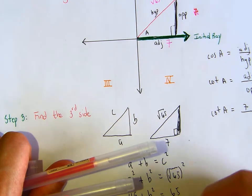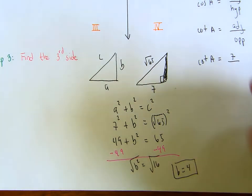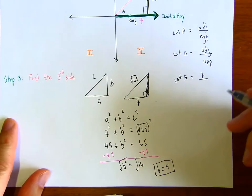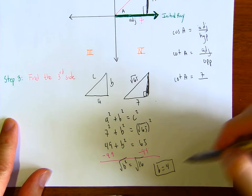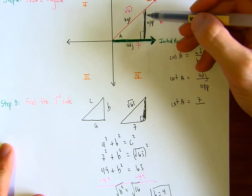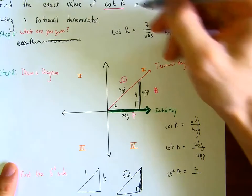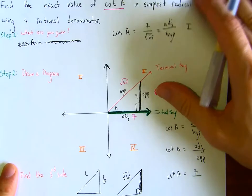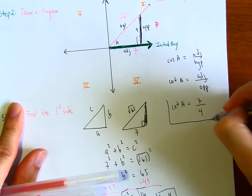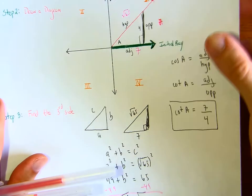So b squared equals 16. Take the square root of both sides: b equals 4. This 4 represents the distance of the opposite side. And why is it helpful? Because cotangent of a is adjacent over opposite, which is just 7 over 4. And that's it for the first problem.